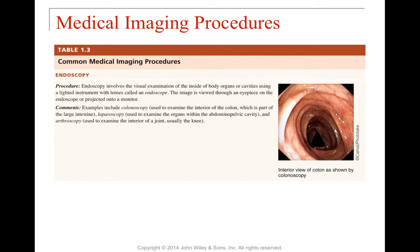Anytime you see the suffix '-oscopy,' you're talking about a camera — an endoscopic procedure using a camera inside the body in a particular region. A colonoscopy goes into the colon. A laparoscopy is used during surgery to examine organs inside the abdominal-pelvic region — laparoscopic surgery is a major advancement in medicine. Arthroscopy is used inside interior joints, usually the knees — for example, to sew up a tear in the meniscus without entirely opening the knee, drastically reducing recovery time.